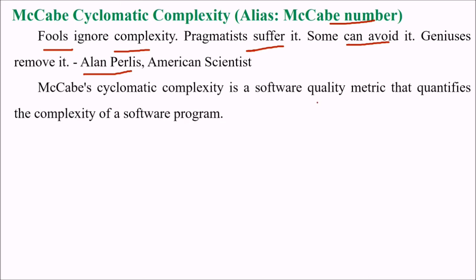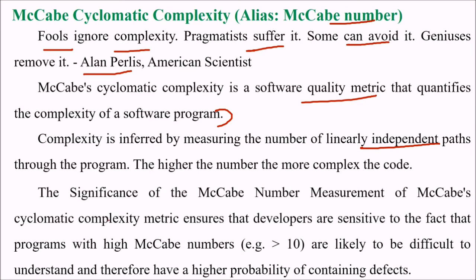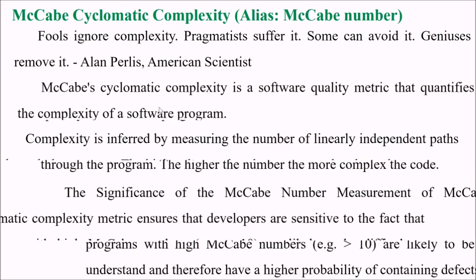McCabe cyclomatic complexity is a software quality metric that quantifies the complexity of software program, and complexity is inferred by the number of linearly independent paths through the program, as we have just seen. The higher the number, the more complex the code will be. The significance of this McCabe number measurement ensures that developers are sensitive to the fact that programs with high McCabe numbers, generally if it is greater than 10, are likely to be difficult to understand and to maintain, therefore they have high probability of containing defects.